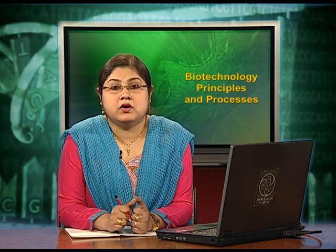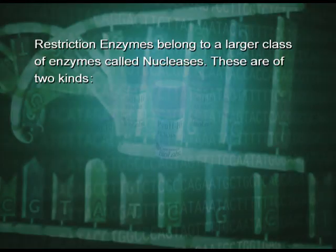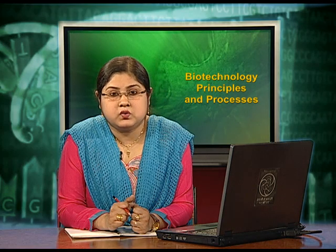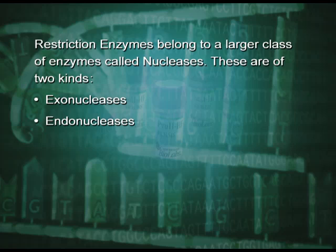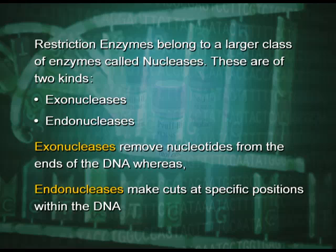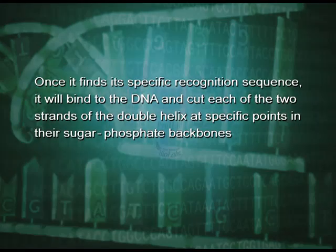Restriction enzymes belong to a large class of enzymes called nucleases. These are of two kinds: exonucleases and endonucleases. Exonucleases remove nucleotides from the end of the DNA, whereas endonucleases make cuts at specific positions within the DNA. Each restriction endonuclease functions by inspecting the length of a DNA sequence. Once it finds its specific recognition sequence, it will bind to the DNA and cut each of the two strands of the double helix at specific points in their sugar-phosphate backbones.